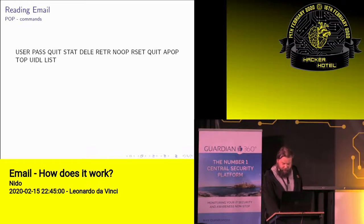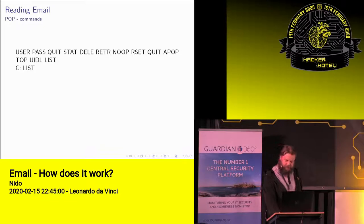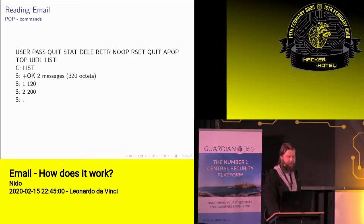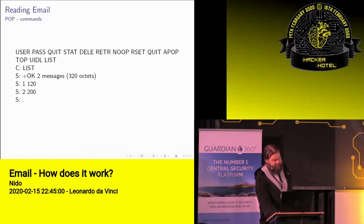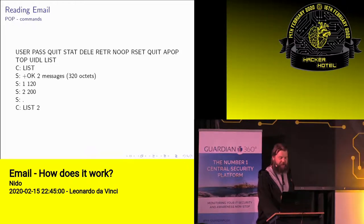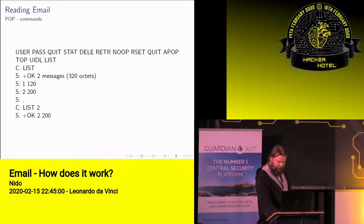For an example communication, the client can send a command LIST, and the server will answer: okay, there are two messages, and that's a total of 320 octets. In this example, the first message was 120 octets, and that's the end of the list. You can also send a command with an argument, so LIST 2, and it will list mail number two, which is the one with 200 octets of data.